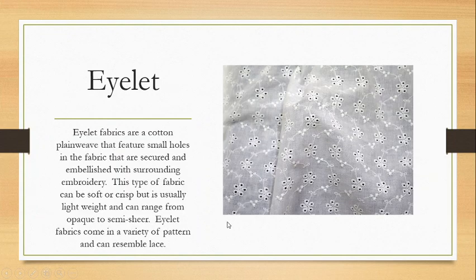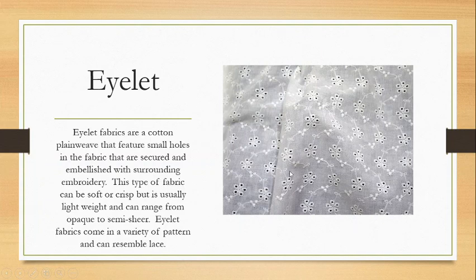Next we have eyelet, a very similar fabric to dotted Swiss. Eyelet fabrics are a cotton plain weave featuring small holes in the fabric that are secured and embellished with surrounding embroidery. This fabric can be soft or crisp, but is usually lightweight and can range from opaque to semi-sheer. Eyelet fabrics can come in various patterns and can resemble lace, but aren't true laces. They are often created with a lappet loom as well.